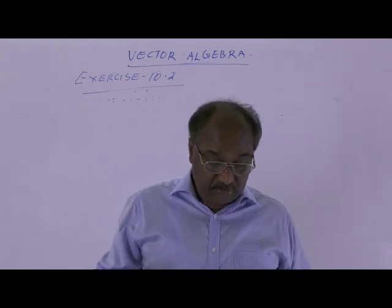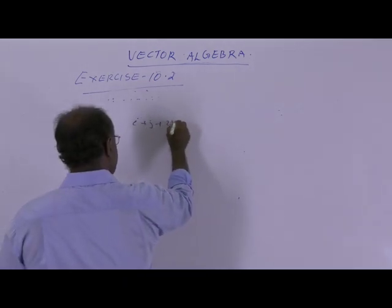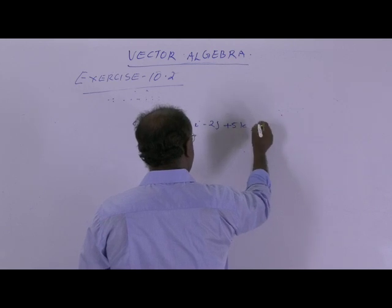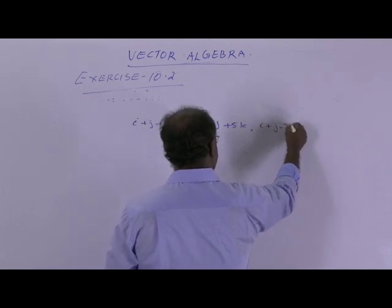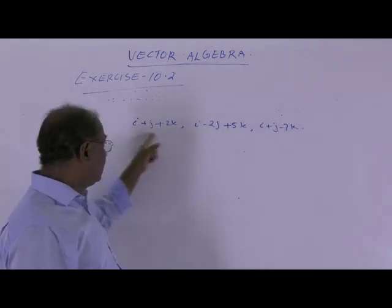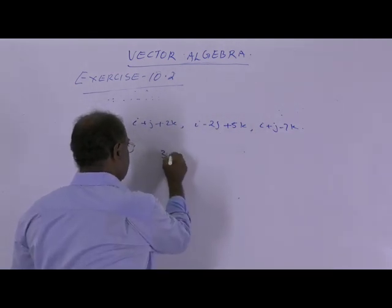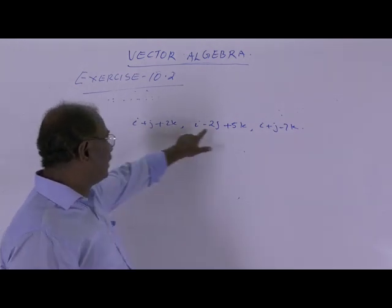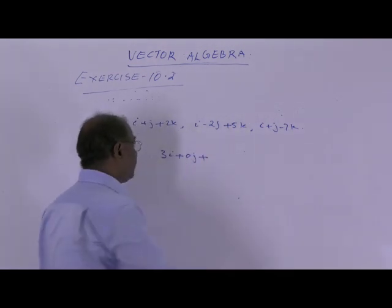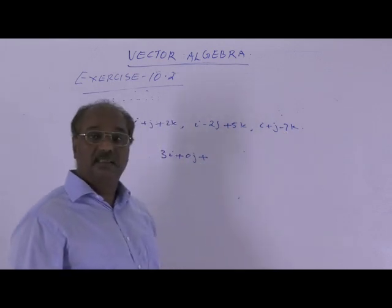Find the sum of the following three vectors: i plus j plus 2k, i minus 2j plus 5k, and i plus j minus 7k. Adding corresponding component parts: i plus i plus i is 3i. Then j minus 2j plus j is 0j. Then 2k plus 5k minus 7k is 0k. So the sum of these three vectors is 3i.